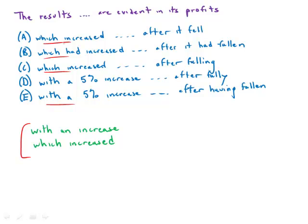With an increase has the noun. Which increased has a verb. And so first of all, this is more direct and active. And the with, it's a bit unclear to what the with refers, but which definitely refers to profits.